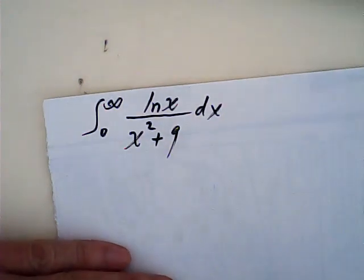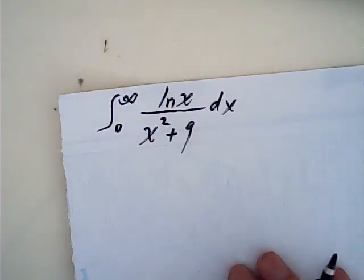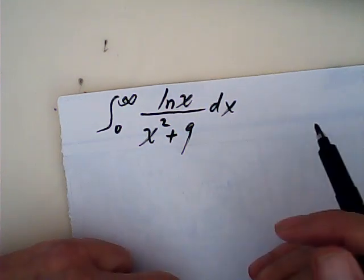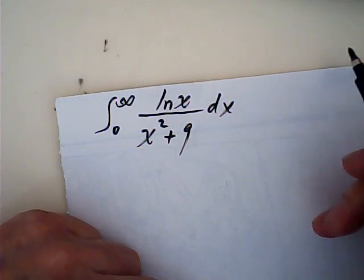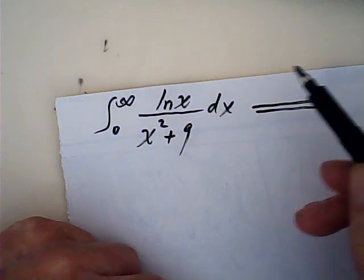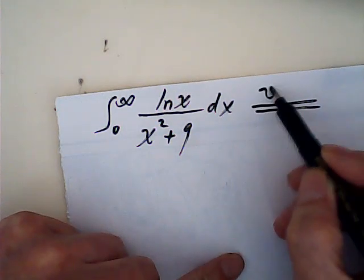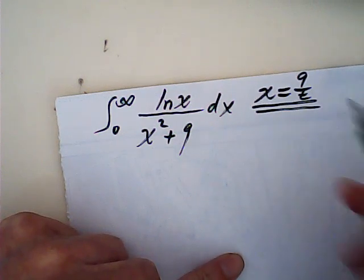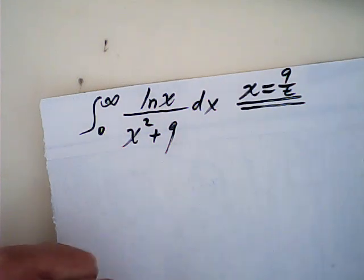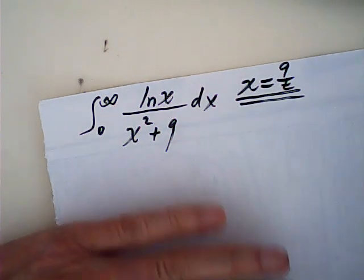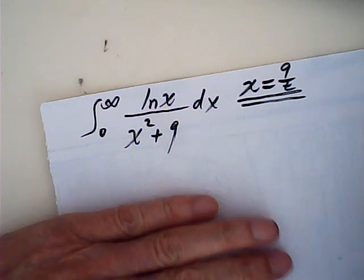Now let's take a look at this integral. There's a very clever method of substitution — we substitute x for 9 over t. It's very interesting to start with this kind of substitution, but it ends up with a very good result.